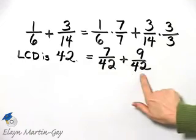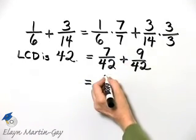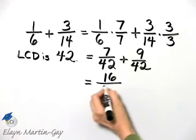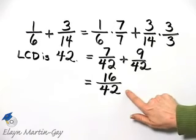Now I am adding. The denominators are the same. So it is 7 plus 9 which is 16 over a common denominator of 42. That is my sum.